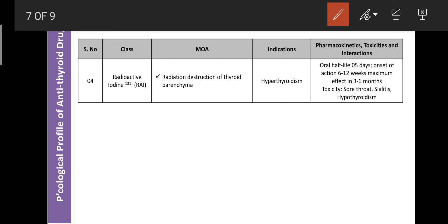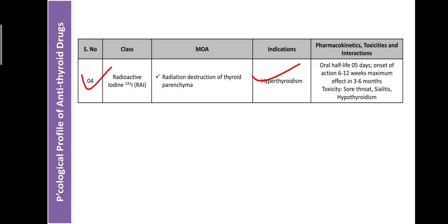Profile of radioactive iodine 131I (RAI): Mechanism — it destroys follicular cells and thyroid tissue; due to lack of thyroid parenchyma, hormones are not produced. Used in treatment of hyperthyroidism. Administered orally; half-life is 5 days; onset of action takes 6 to 12 weeks maximum. Toxicity includes sore throat, sialadenitis, and hypothyroidism. If you have any doubts, post your question in the comment box or through WhatsApp. Thank you, dear students.